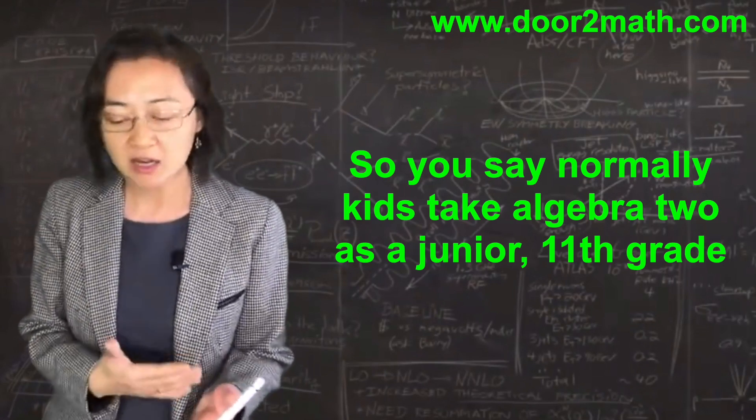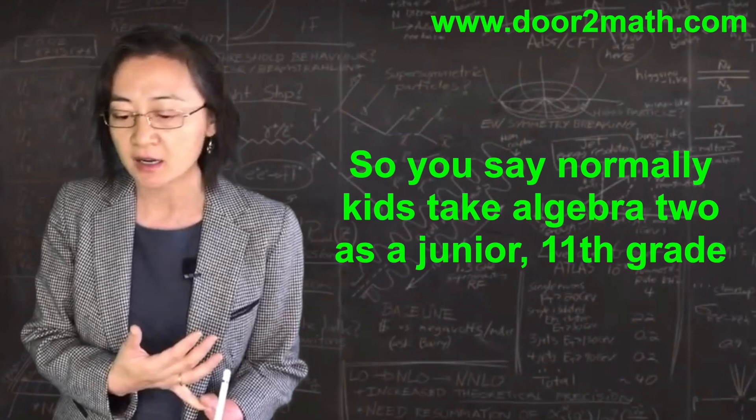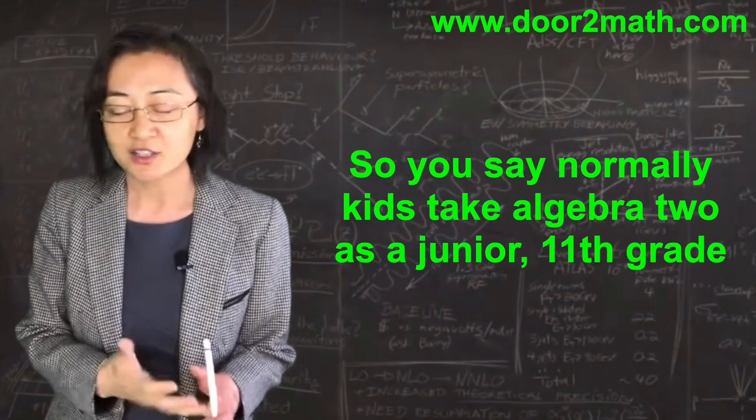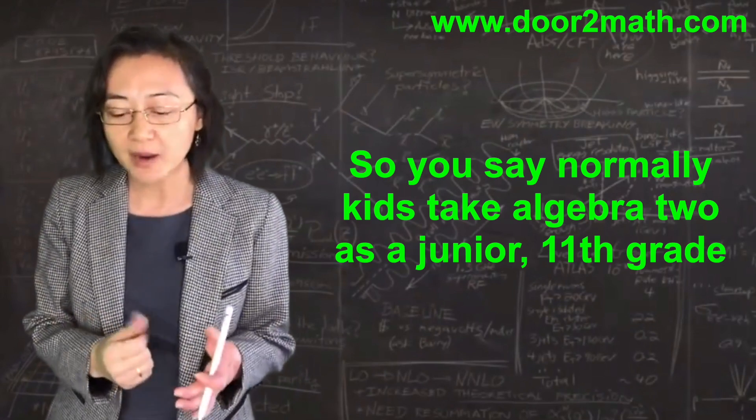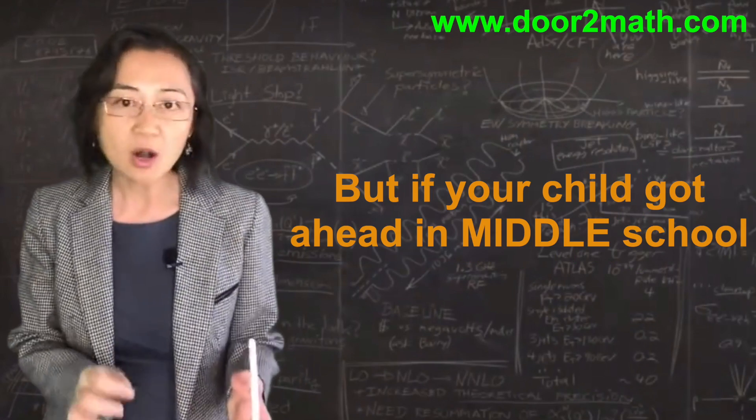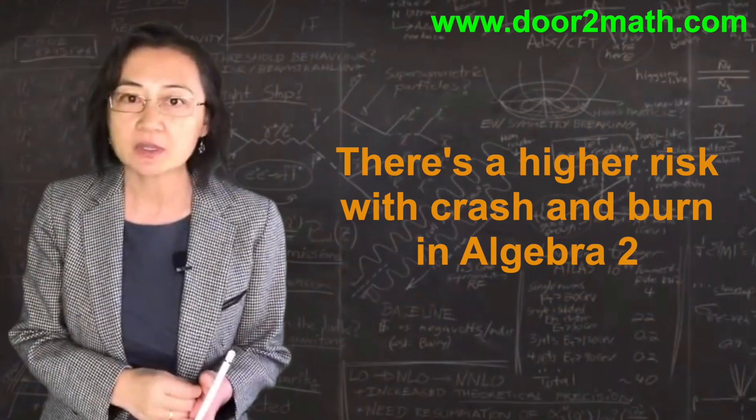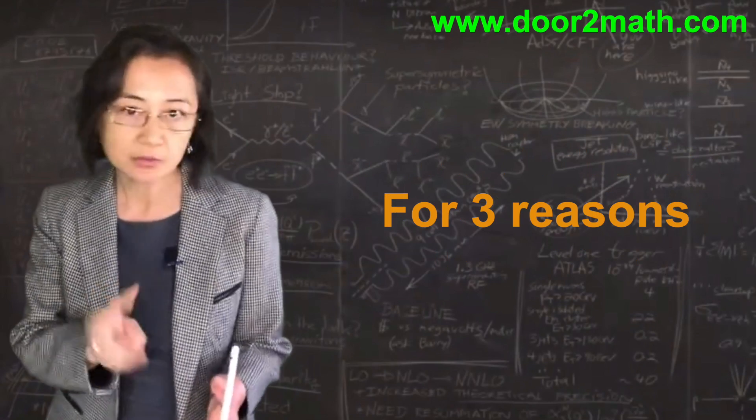By then, most kids know what to expect because they've taken Algebra 1 as a freshman and geometry as a 10th grader. So by junior year, they know more or less what to expect. But if your child got ahead in middle school, there's a higher risk of crash and burn with Algebra 2 for three reasons.